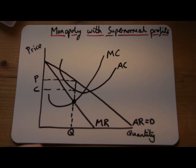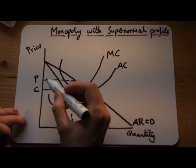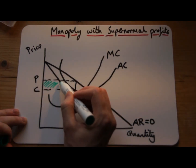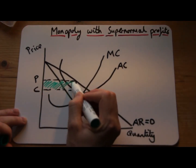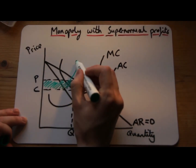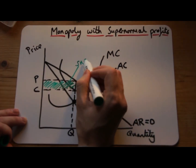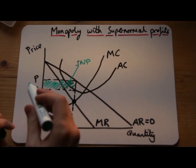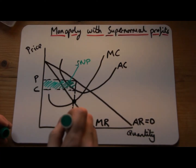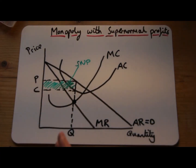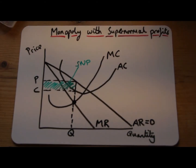Now I can shade in the supernormal profits, showing the supernormal profits of a monopoly. We've got a price there, quantity there, cost there — and this monopoly is showing supernormal profits.